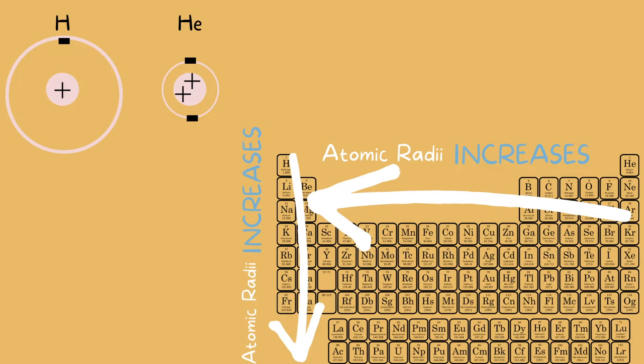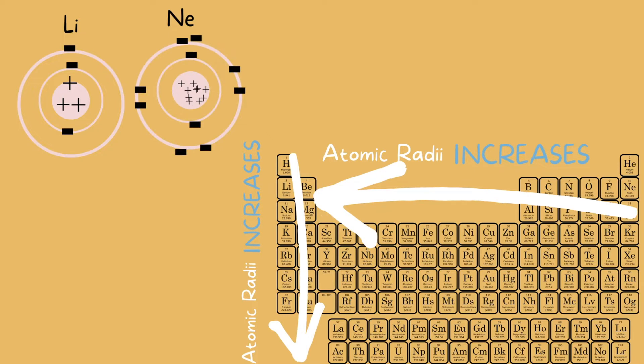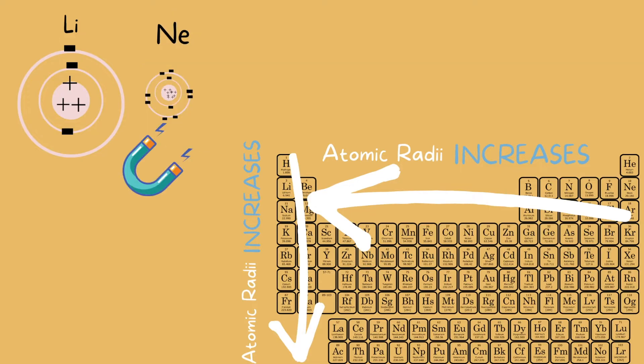Let's compare lithium and neon. Lithium has three protons and three electrons. Neon has ten protons and ten electrons. Simply because neon has more protons, it will have a greater pull on the electrons and bring them closer to the center, making neon more compact and smaller than lithium.